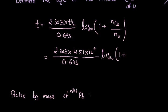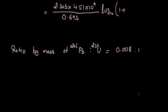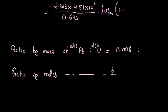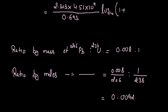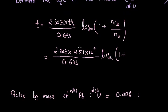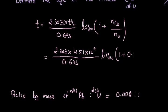The mass ratio of lead-206 to uranium-238 is given as 0.008 : 1. To convert this to a mole ratio, we divide by their respective atomic masses: (0.008 / 206) : (1 / 238). Solving this equation, the mole ratio of lead to uranium comes out as approximately 0.0092. This mole ratio is what is required in the disintegration equation.